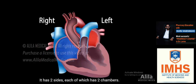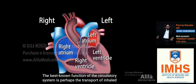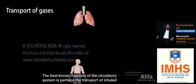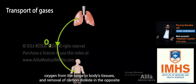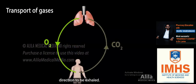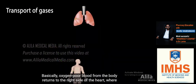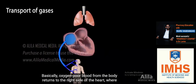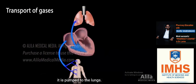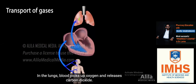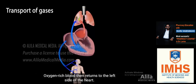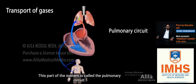The heart has two sides, each of which has two chambers. The best-known function of the circulatory system is the transport of inhaled oxygen from the lungs to the body's tissues and removal of carbon dioxide in the opposite direction to be exhaled. Oxygen-poor blood from the body returns to the right side of the heart, where it is pumped to the lungs. In the lungs, blood picks up oxygen and releases carbon dioxide. Oxygen-rich blood then returns to the left side of the heart. This part of the system is called the pulmonary circuit.